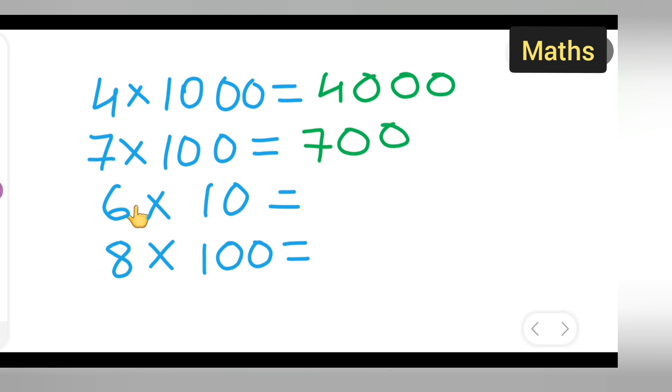Next, 6 into 10 will be 60. What you will have to do is take this number 8 and add these 2 zeros.